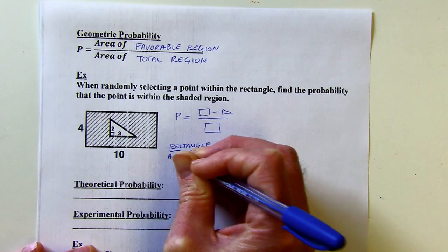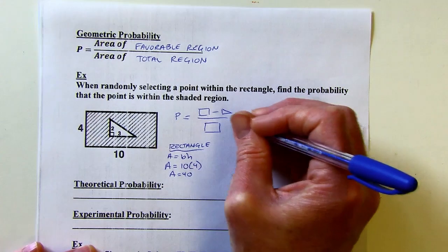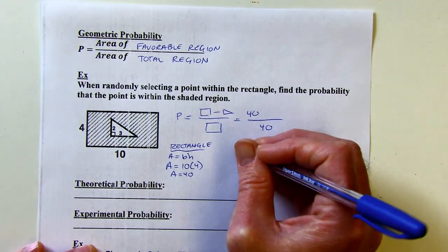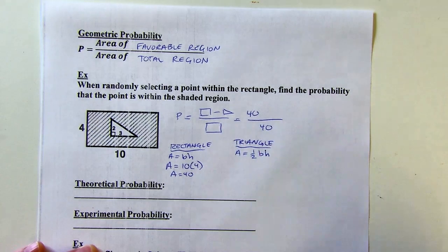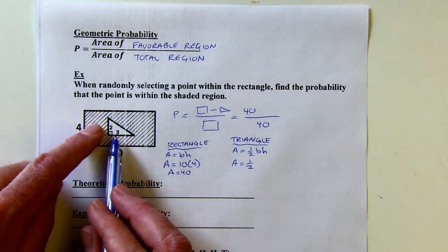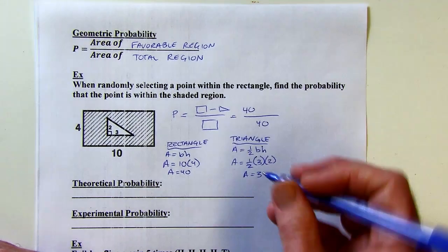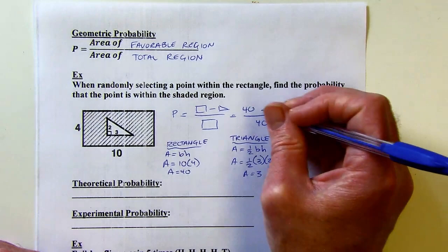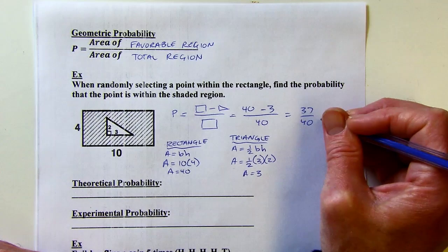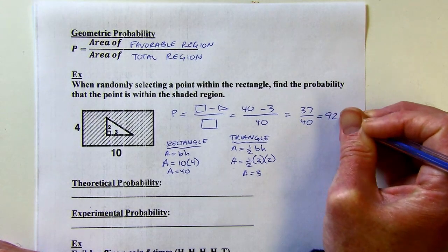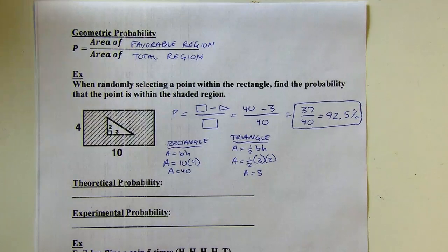The total region is the entire rectangle, and the shaded region is the rectangle with a triangle cut out of it. The area of the rectangle is base times height: 10 times 4 equals 40. The triangle area formula is one-half base times height — the base 3 and height 2 are perpendicular, so the area is one-half of 6, which is 3. So the shaded area is 40 minus 3 = 37, giving a probability of 37/40, which is already reduced. As a percentage, that's 92.5%.